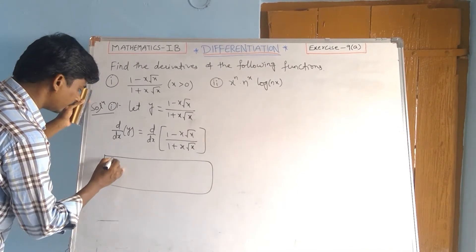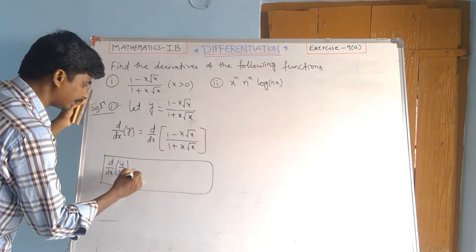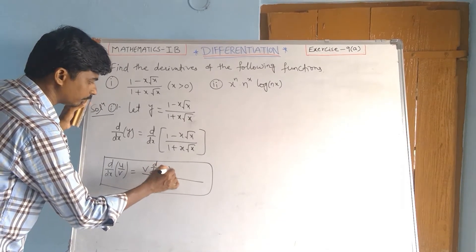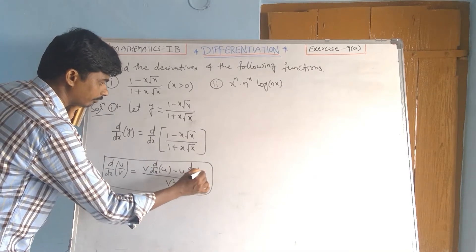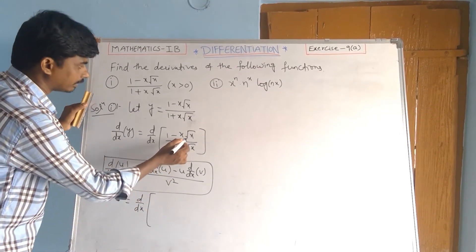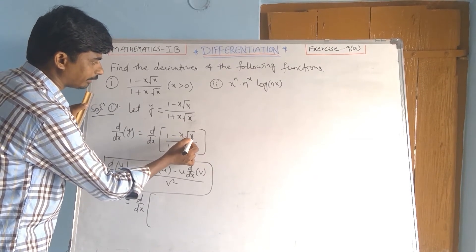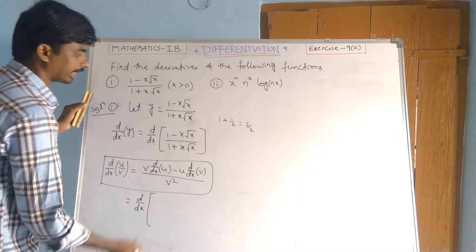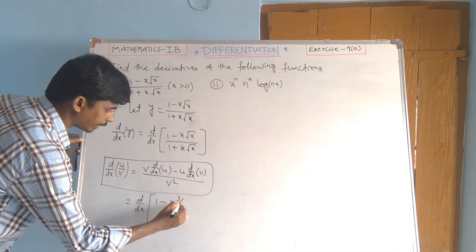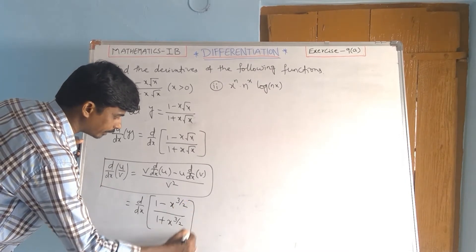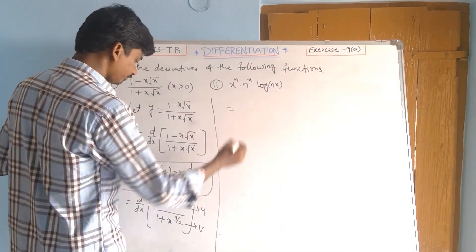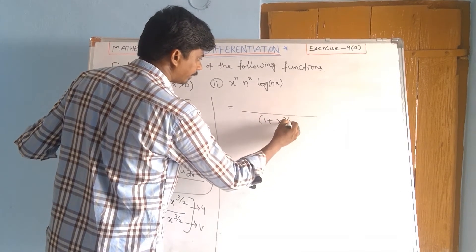Now, using the u by v rule: dy/dx of u by v equals, in the denominator v squared, and the numerator is v times dy/dx of u minus u times dy/dx of v. Now, x times x to the power of 1/2 gives x to the power of 1 plus 1/2, which equals 3/2. So we rewrite as (1 minus x to the power of 3/2) by (1 plus x to the power of 3/2). This is u, this is v.